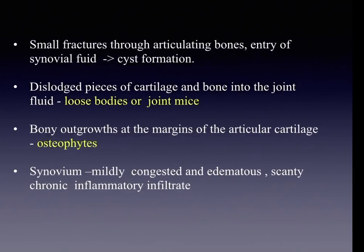Repeated small fractures through articulating bones allow entry of synovial fluid, resulting in cyst formation. Dislodgement of pieces of cartilage and bone into the joint fluid results in loose bodies, also called joint mice. There can also be bony outgrowths at the margins of articular cartilage called osteophytes. The synovium appears mildly congested and edematous with some scanty chronic inflammatory infiltrate.